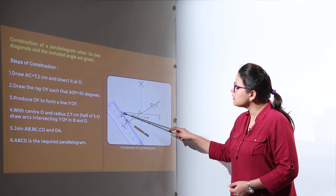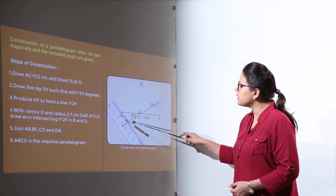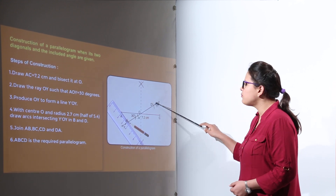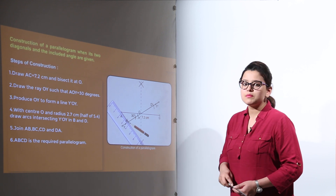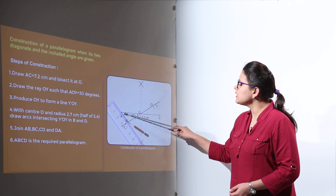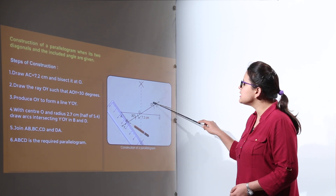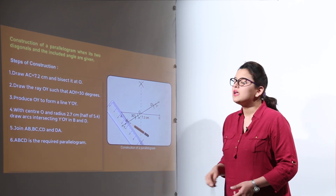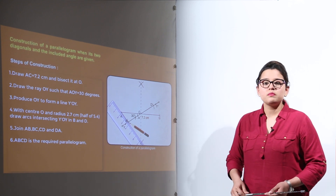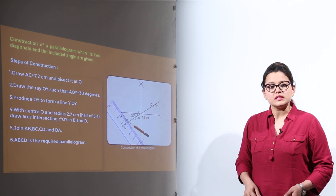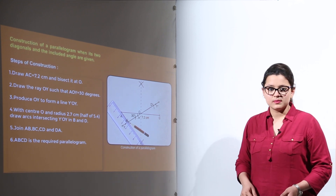We now have points A, B, C, and D. The last step is to join AB, BC, CD, and DA. Therefore we get the required parallelogram ABCD.